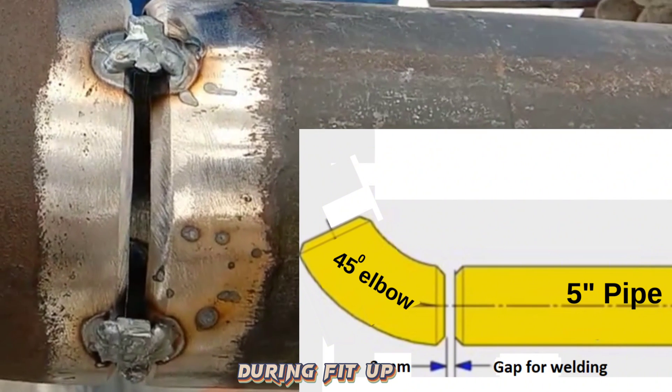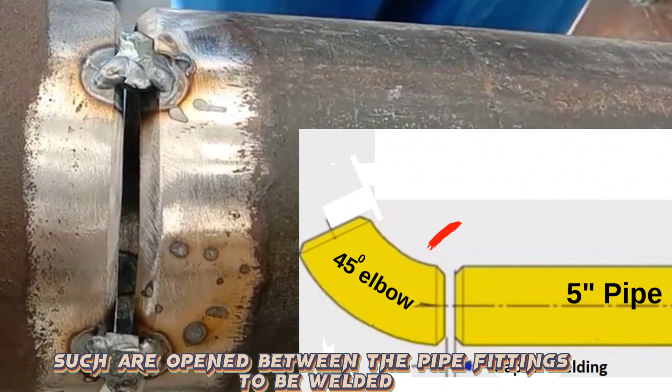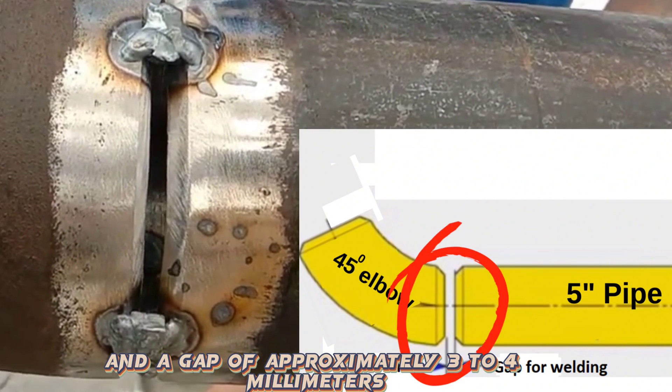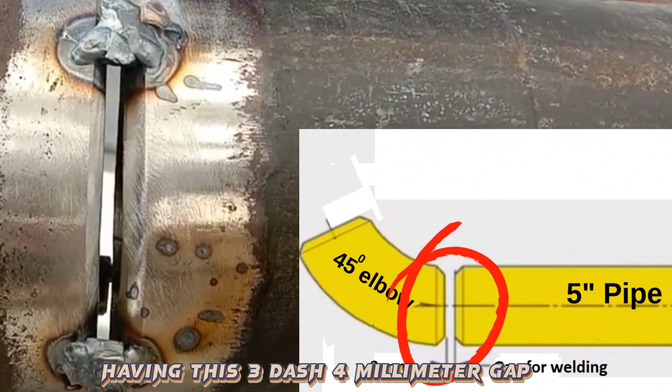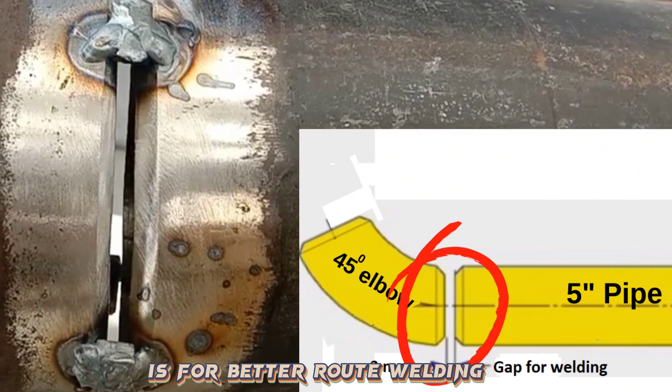During fit-up, gaps are opened between the pipe fittings to be welded, approximately 3-4 millimeters. Having this 3-4 millimeter gap is for better root welding.